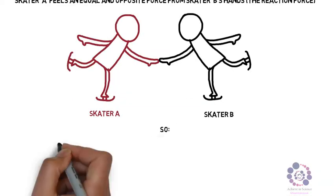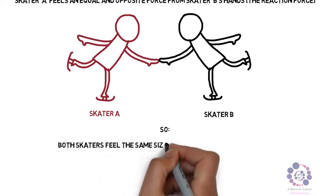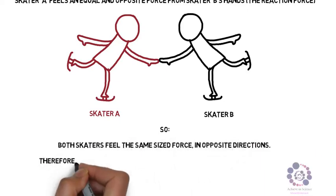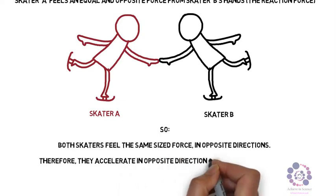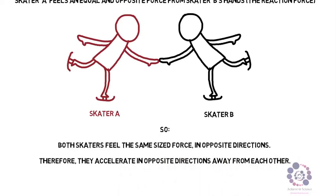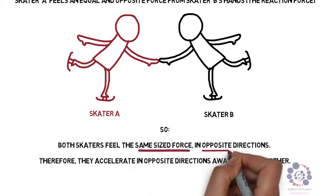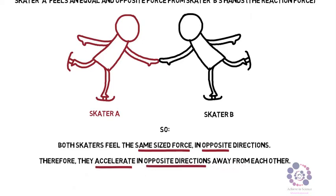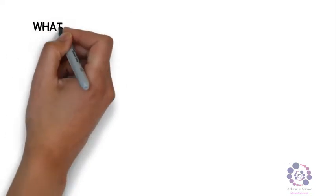Therefore, both skaters feel the same size force in opposite directions. Therefore, they will accelerate in opposite directions away from each other. It is important to highlight the same size force and opposite causes acceleration in opposite directions.